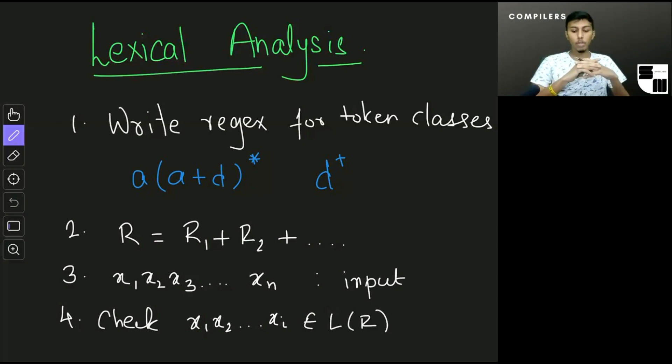R is the union of all of the regular expressions that we have written. So we check this for all of our i, so my i will go from one to n.